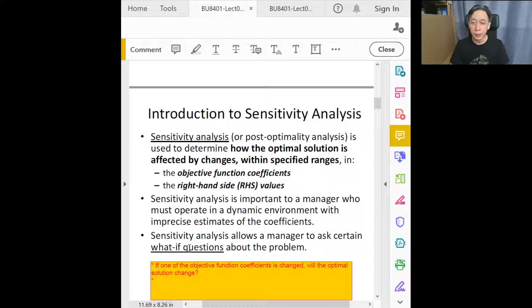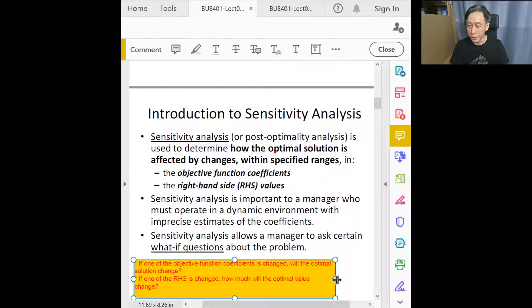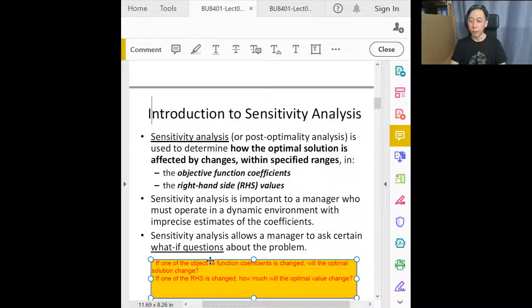The second kind of question is relating to the right hand side of the constraints. If one of the right hand side values is changed, how much will the optimal value change? These two categories of questions basically summarize the kind of questions we can use sensitivity report to answer.